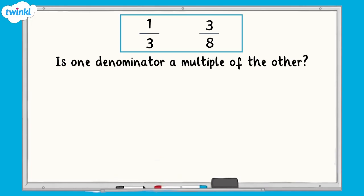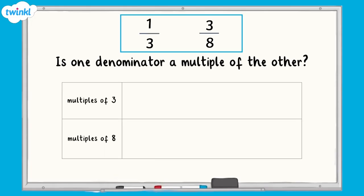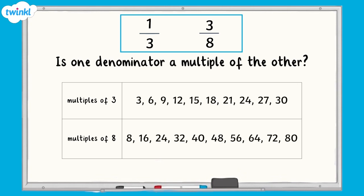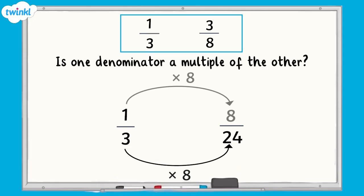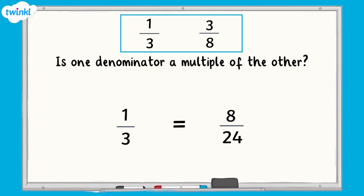So what do we do? Well, all we need to do is find a common multiple of both denominators. We can do that by listing out the multiples of each denominator until we find a common multiple. As you can see, 24 is the first common multiple of both 3 and 8, so we say that 24 is the lowest common denominator. 3 multiplied by 8 equals 24, so I must apply the same rule to the numerator. 1 multiplied by 8 equals 8. We would say 1 third is equivalent to 8 24ths.